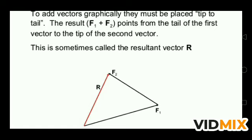The tail of F2 is placed on the head of F1. The resultant R (shown in red) is drawn from the tail of F1 to the head of F2. This is the way to add any two given vector quantities graphically.